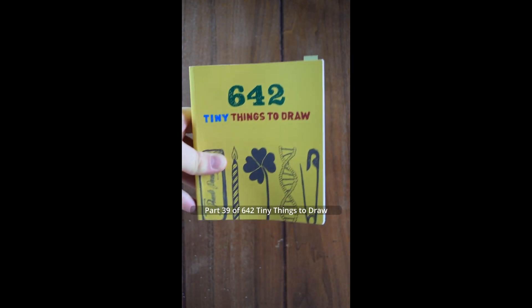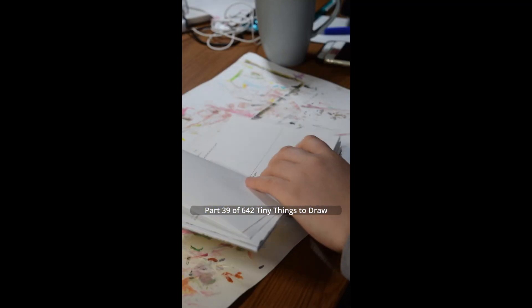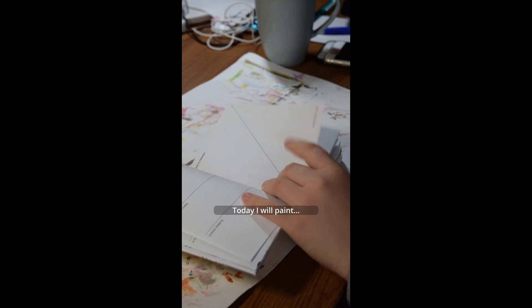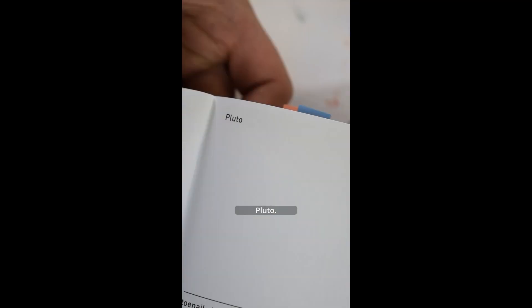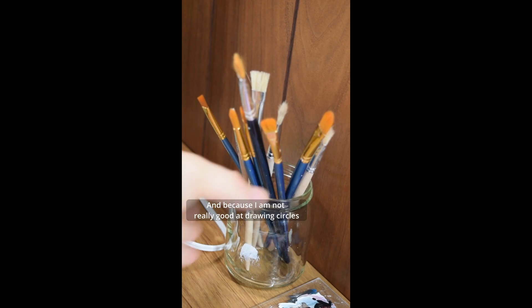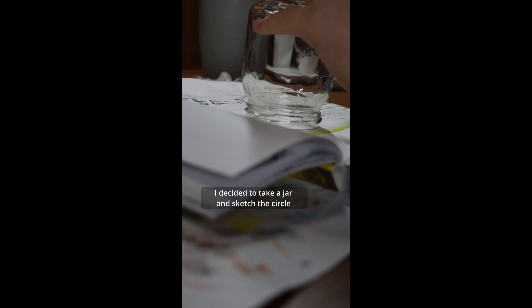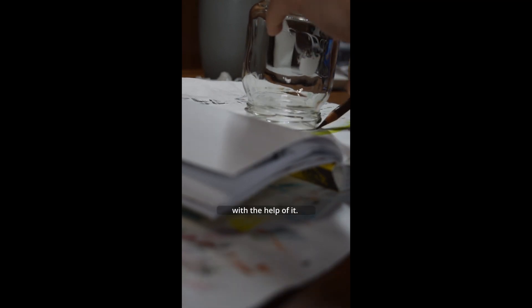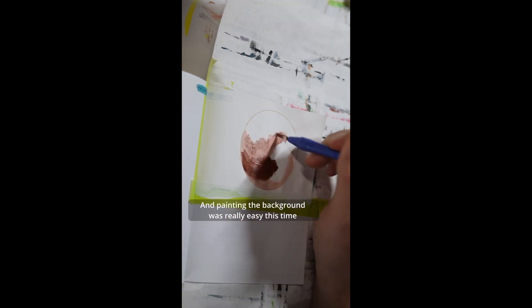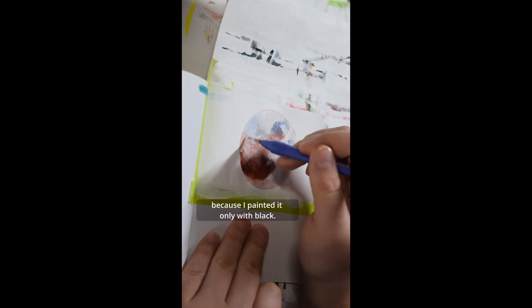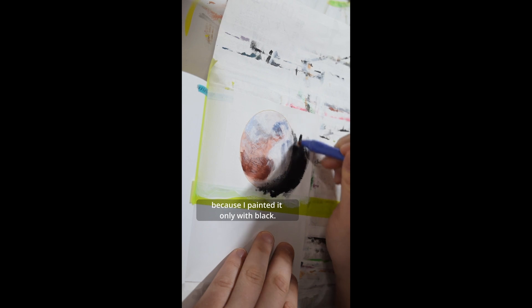Part 39 of 642 tiny things to draw. Today I will paint Pluto. And because I'm not really good at drawing circles, I decided to take a jar and sketch the circle with the help of it. And then I painted Pluto. And painting the background was really easy this time because I painted it only with black.